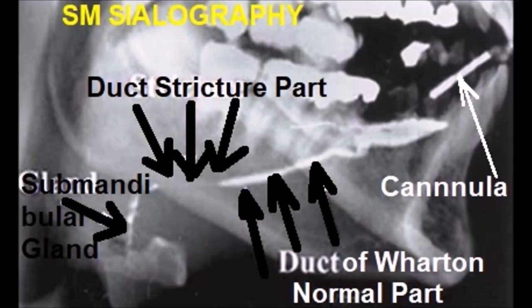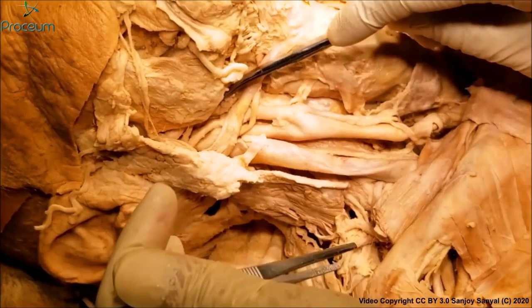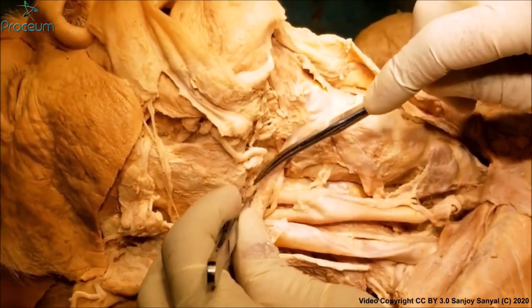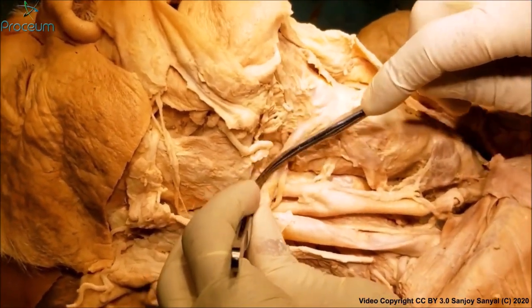This is the submandibular sialography showing cannulation of Wharton's duct, the duct itself, and the gland. Those are all the key points about the submandibular salivary gland.